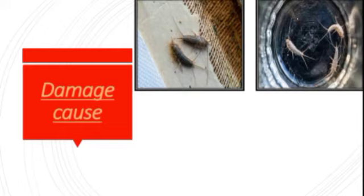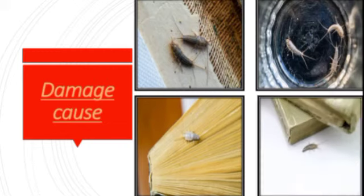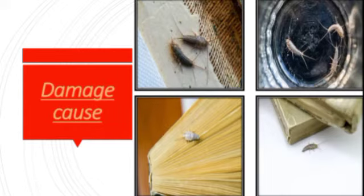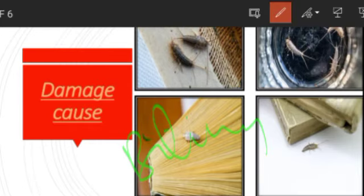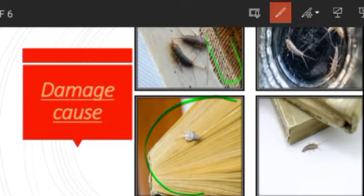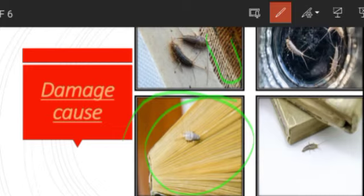They are considered household pests because they destruct household things. As they have biting and chewing type of mouthparts, they are able to destruct wooden material and carpets. They also prefer to live in books not in regular use, feeding on the papers of those books and destroying them. That is why they are considered a household pest.